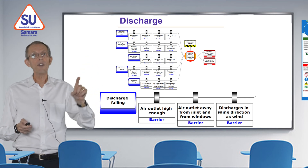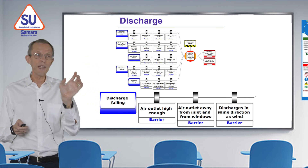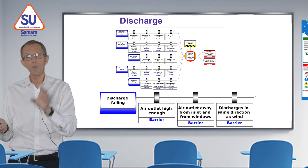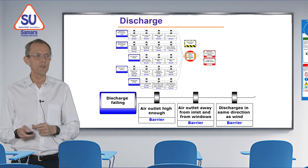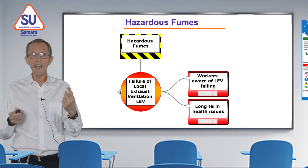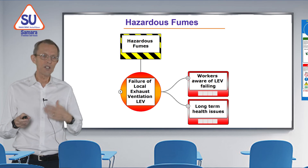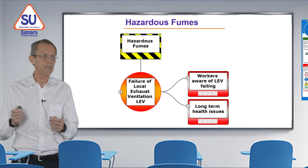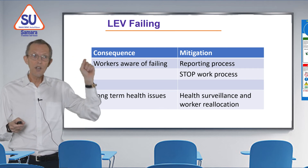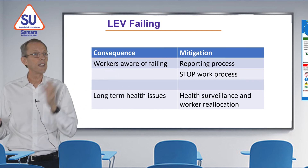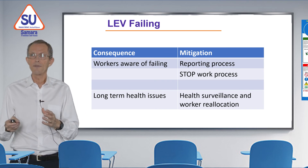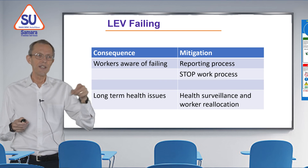It's possible that any one of those five could fail — all the barriers we have could fail. The top event will happen, the exhaust will fail, and some people will be exposed to the contamination. For that there will be consequences. We'll consider two consequences. The first is that workers are aware the system is failing — if there's a system in place where workers report something going wrong and action is taken, that's a mitigation. Or they could stop the work — that's another mitigation to control the failing system.